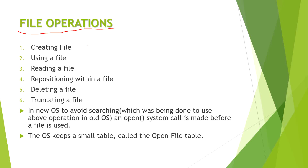There are certain file operations. First is creating a file. Second is using or opening a file. Third is reading a file — taking inputs from the file. Fourth is repositioning within a file, for example copying content from line 23 to line 46. Fifth is deleting a file — fully removing it from disk. Sixth is truncating a file, which means erasing all existing contents and starting the file fresh from the beginning.